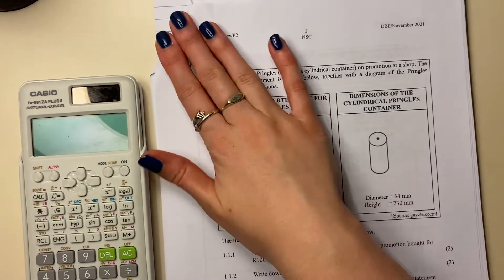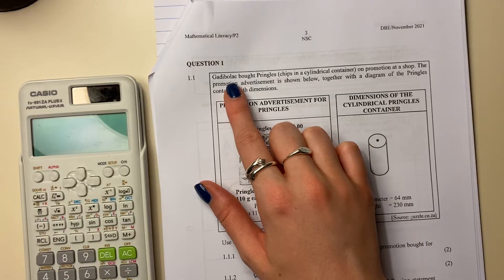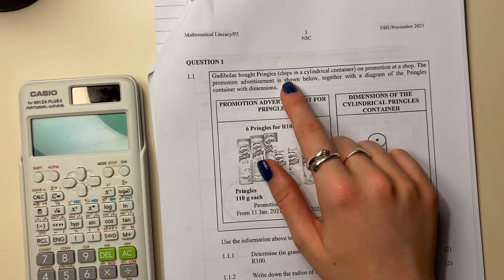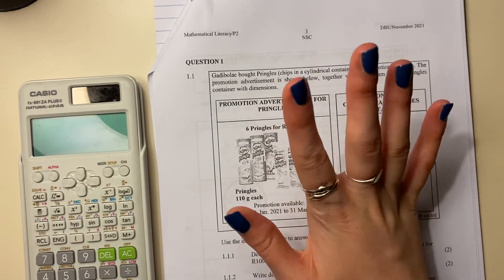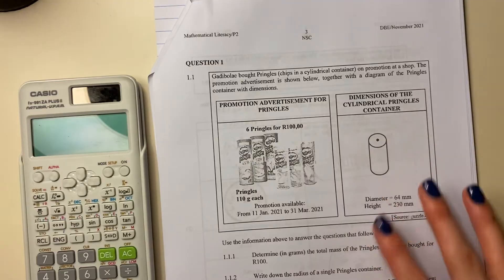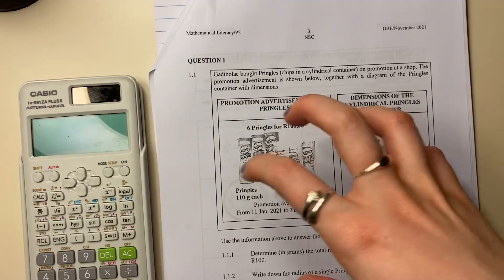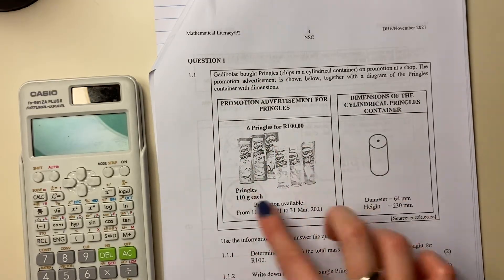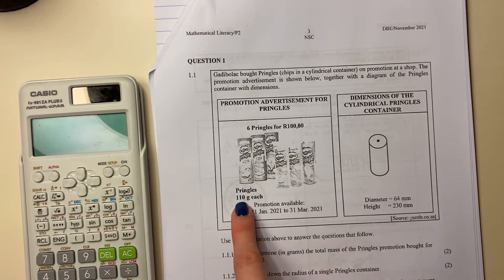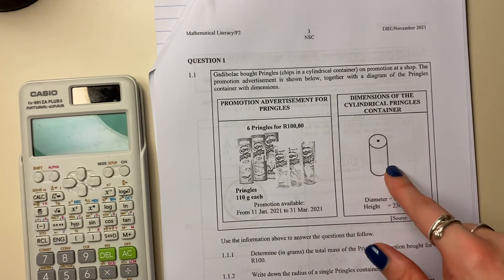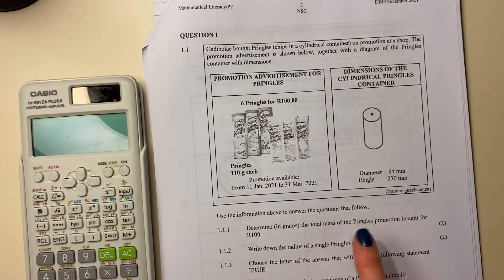So first question, question one. Daddy Belole bought Pringles chips in a cylindrical container on promotion at a shop. Apologies for that pronunciation. The promotion advertisement is shown below together with a diagram of the Pringles container with dimensions. So promotion advertisement - you have these six Pringles for a hundred rand deal. Love Pringles, right? And each of the Pringles weigh 110 grams. And then this is basically showing you the dimensions over here.